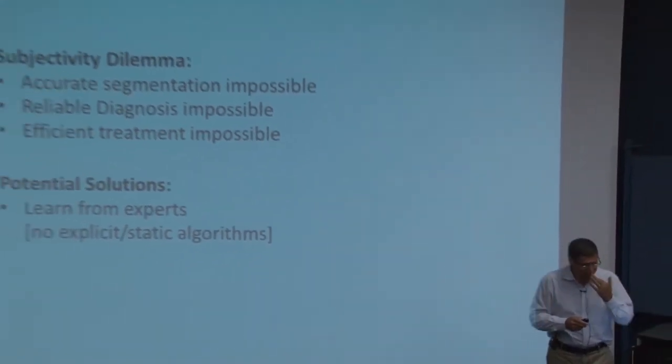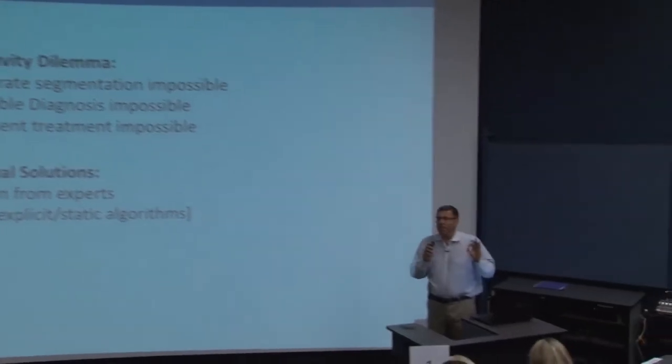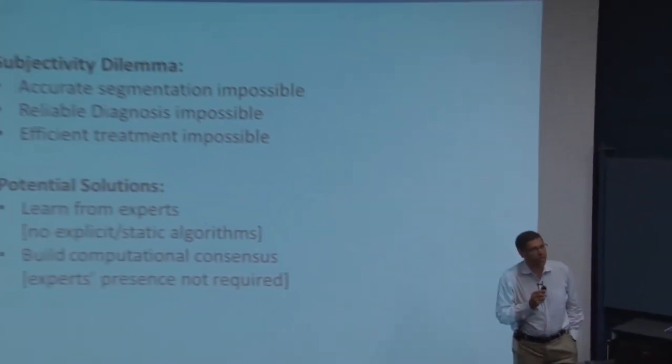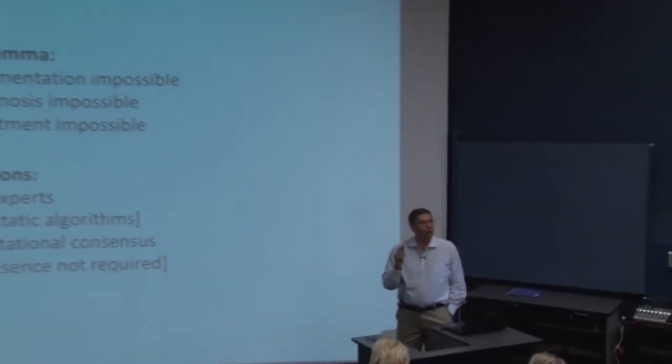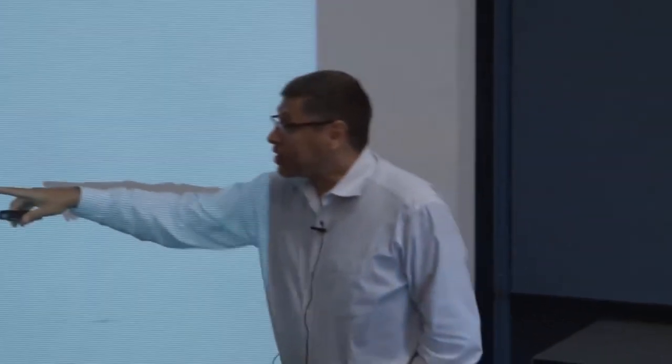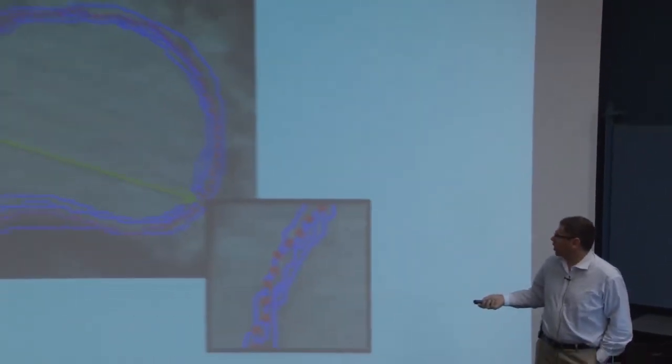The potential solution is that we have to learn from experts. We have to give up our ego in academic research — give up inventing the super algorithm for segmentation. We have to put the expert at the center of calculation: no explicit static algorithm, but learnable, flexible platforms that the expert can rely on and that can learn from the expert. Building computational consensus seems to be the only way to address the variability issue — learning from experts and, in their absence, building consensus from what we have.